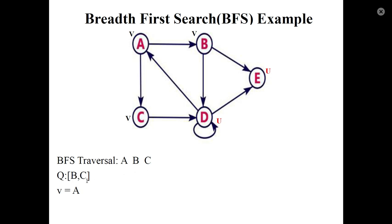Next step, dequeue from Q. B will be dequeued. B has unvisited neighbors D and E. Mark them as visited. D and E are traversed and inserted into Q.